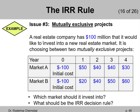So what do we know about each project? A real estate company has $100 million that it would like to invest into a new real estate market. It is choosing between two mutually exclusive projects. Market A would generate $50 million in one year, $40 million in two years, $40 million in three years, and $30 million in four years.